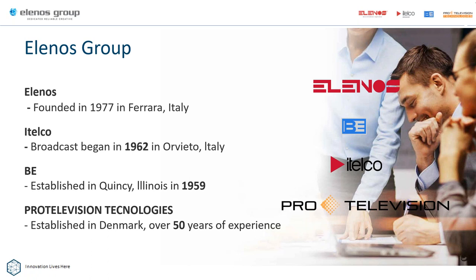Here are the various companies. Elenos was founded in 1977 in Ferrara, Italy. Satelco Broadcast began in 1962 in Orvieto, Italy — both absolutely beautiful places to visit. Broadcast Electronics was established in Quincy, Illinois in 1959, though it actually started in Silver Spring, Maryland, before moving to Quincy. Pro Television Technologies was established in Denmark over 50 years ago. A lot of very interesting technologies brought together in this group.